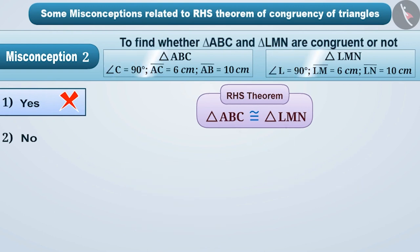Children do not read the given information properly. In triangle ABC, the right angle is at the vertex C.